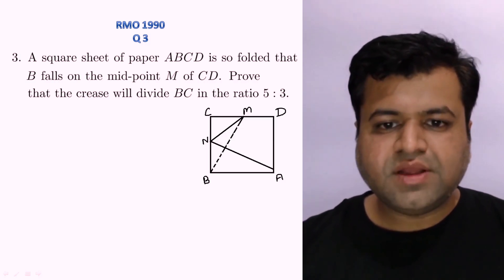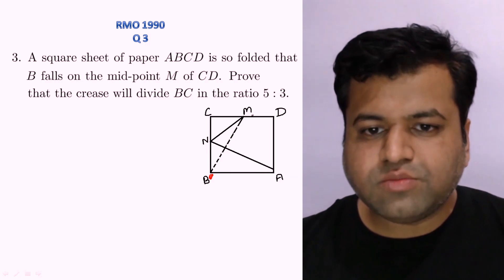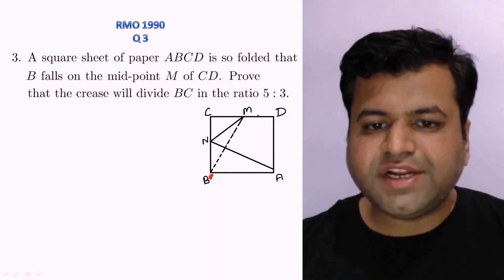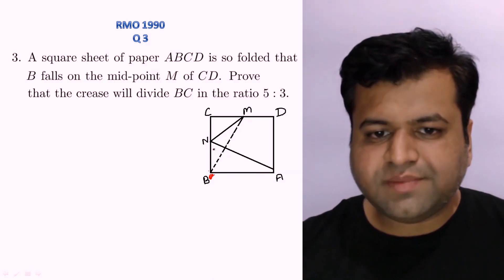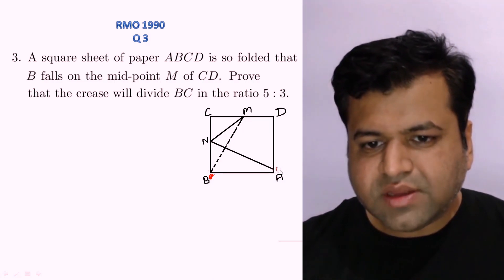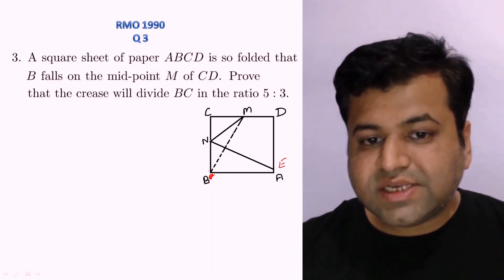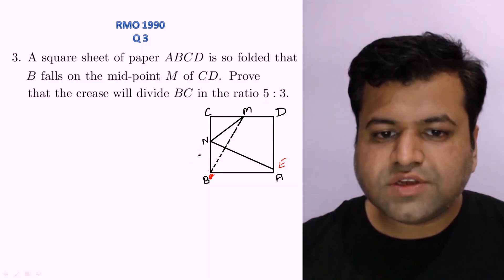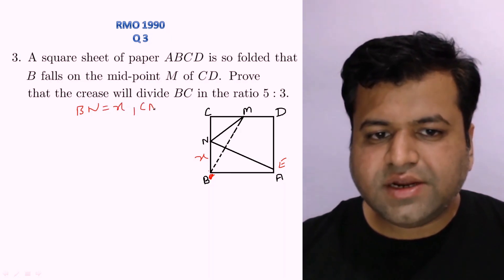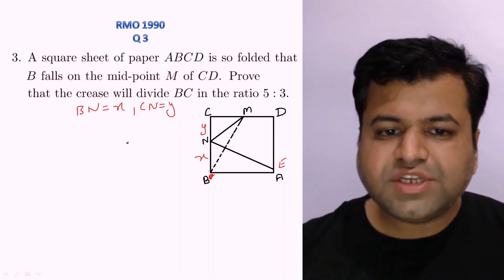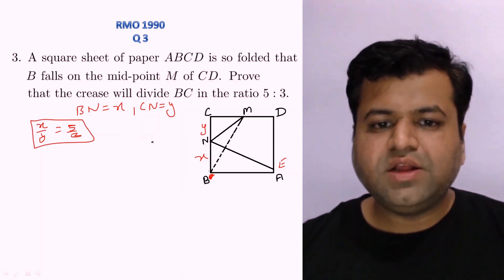Let's draw the figure. ABCD is a square and point B is folded over to point M, which is the midpoint of CD. When we fold the paper, a crease is formed — let's call that crease EN. Let BN = x and CN = y. We need to prove that x/y = 5/3.